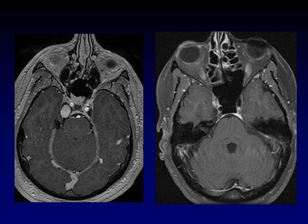So what's our conclusion? This is a uniformly enhancing mass inside Meckel's cave — this is a schwannoma of the fifth cranial nerve in Meckel's cave. This is a schwannoma anterior to Meckel's cave within the cavernous sinus — this is an abducens schwannoma, a sixth cranial nerve schwannoma. Similar in appearance, but with very different clinical implications.